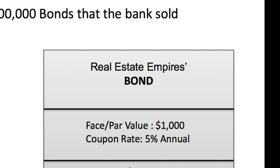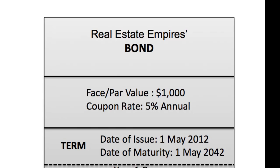Let's move down and look at the term. The date this bond is issued is 1 May 2012, and the date the bond becomes mature is 30 years later on 1 May 2042. When Jesse buys that bond from Real Estate Empires on 1 May for $1,000, the company will pay him his $1,000 back when the bond matures. In between those 30 years, Jesse is collecting interest on his $1,000 investment.